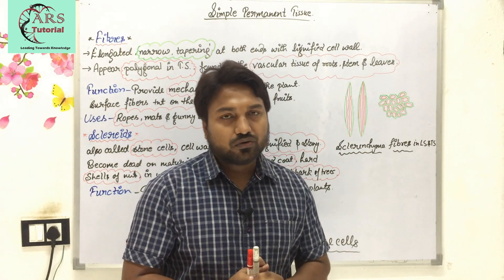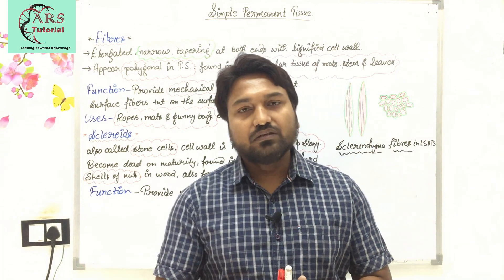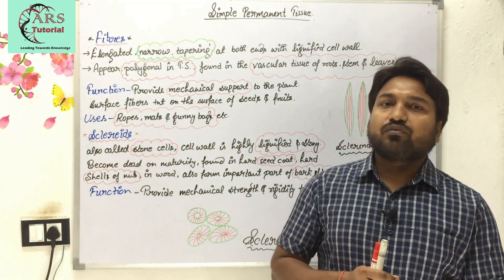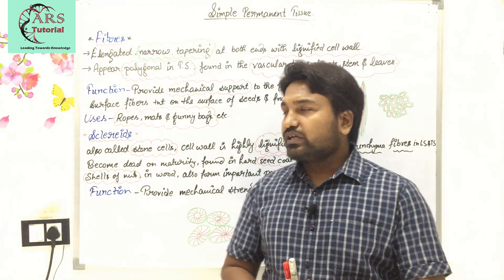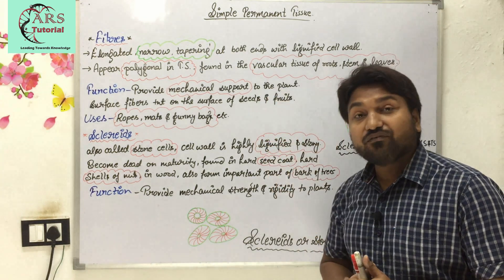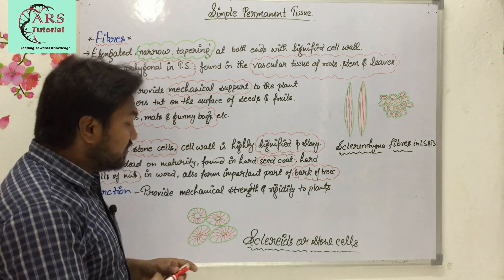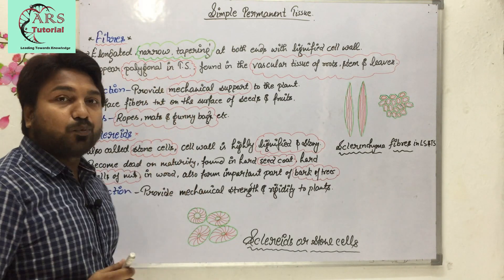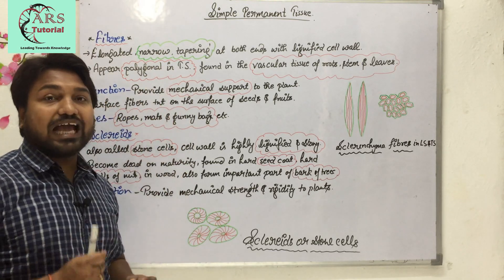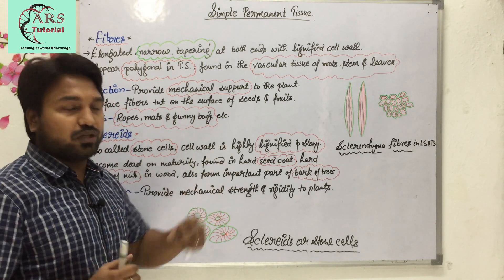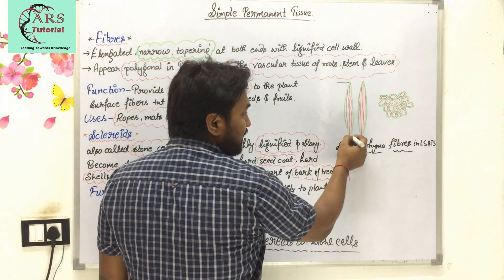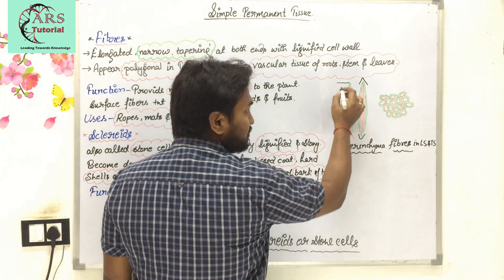First of all we should know what fibers are, their location, and function. Here I have written many important points which you have to note down. Fibers are elongated, narrow, tapering at both ends with a lignified cell wall. Tapering means pointed at both ends. In the diagram, the fibers are narrow and tapering at both ends — this type of structure is known as tapering.